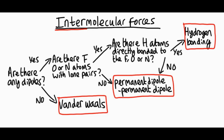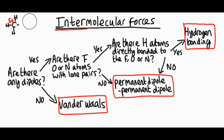Let's look at fluoromethane, CH₃F. Are there any dipoles on the molecule? Yes — fluorine is more electronegative than carbon, so you have a dipole between the carbon and the fluorine. Are there F, O, or N atoms with lone pairs? Yes, fluorine has lone pairs — but are hydrogen atoms directly bonded to the F atoms? No. So this is permanent dipole–permanent dipole. This flowchart can really help you answer questions on intermolecular forces.